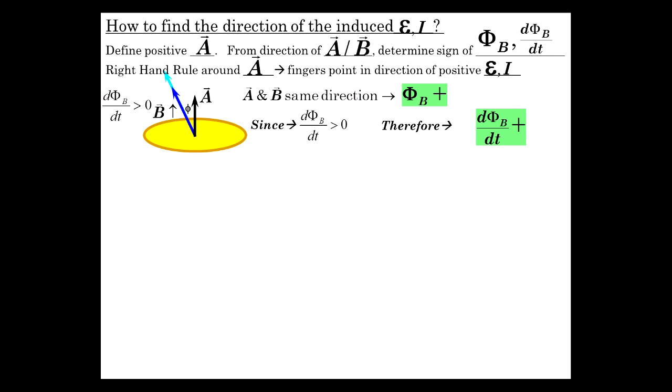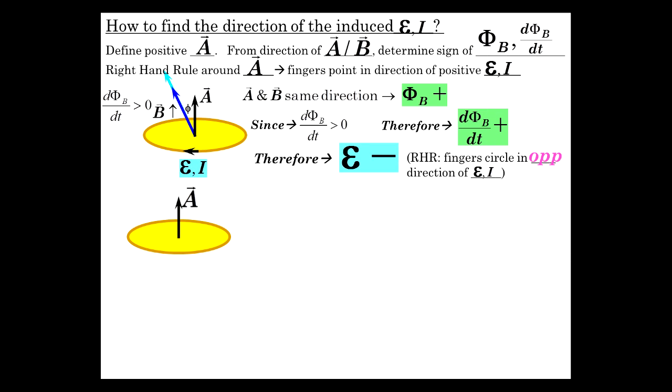dΦ_B/dt is greater than zero, and therefore the flux change is positive, and we get then that the EMF is negative. The induced EMF is negative. Fingers circle in the opposite direction of the EMF and the I. So if you grab the A vector, your fingers encircle around in this direction. That's the opposite direction of the induced quantity. And really it's because that minus sign in front of Faraday's law. If the change in flux is positive, then the induced EMF is negative.